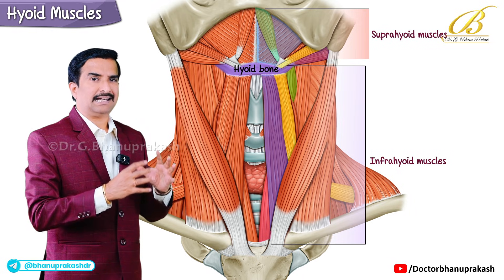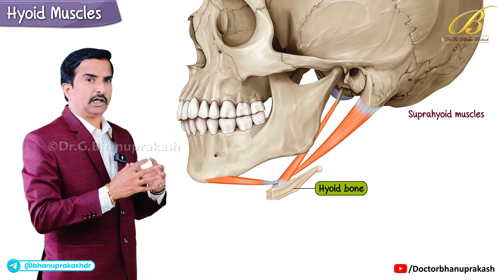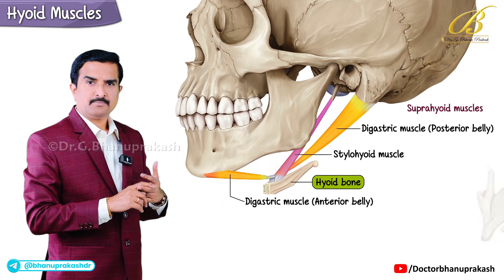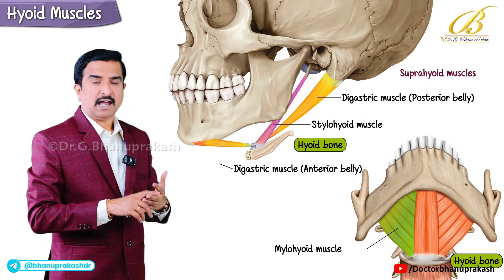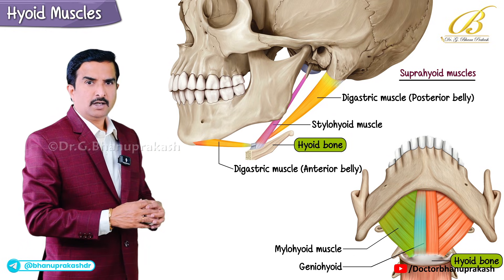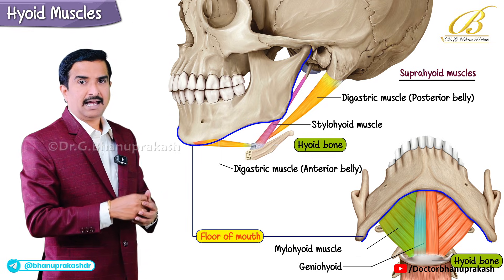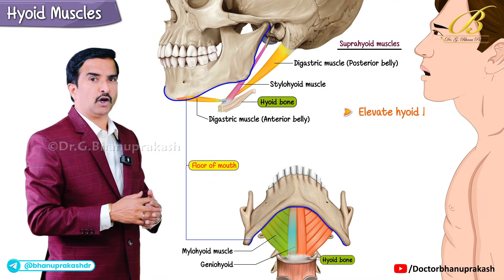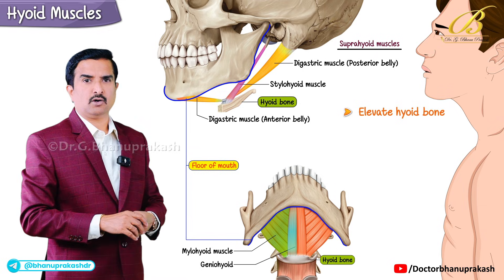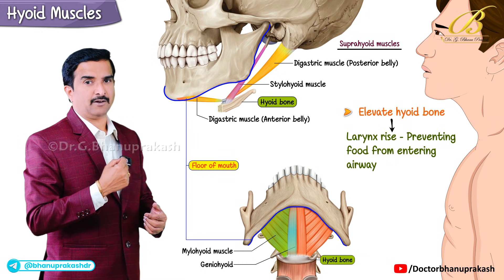First, let's talk about the suprahyoid muscles. This group includes four muscles: digastric, stylohyoid, mylohyoid, and geniohyoid. These muscles primarily form the floor of the mouth and they elevate the hyoid bone during swallowing. This elevation is crucial because it helps the larynx rise, preventing food from entering the airway.